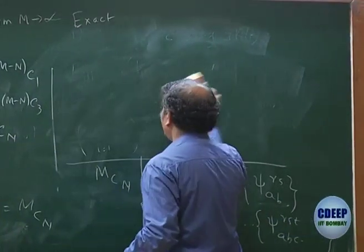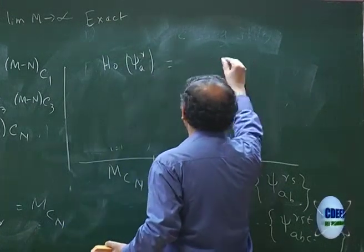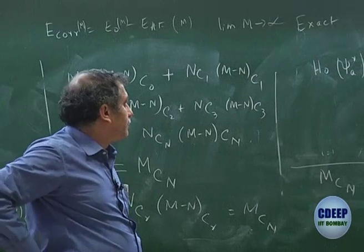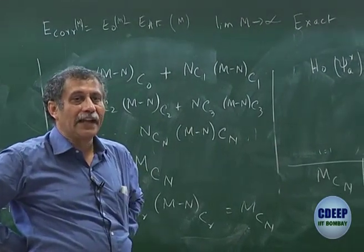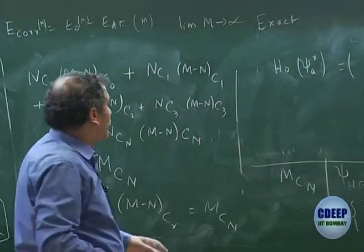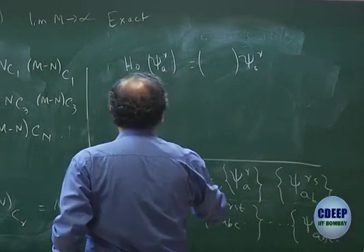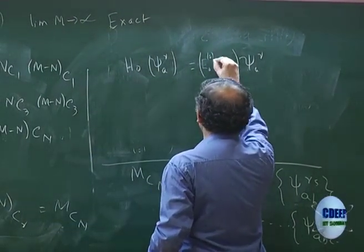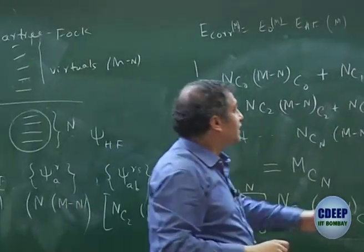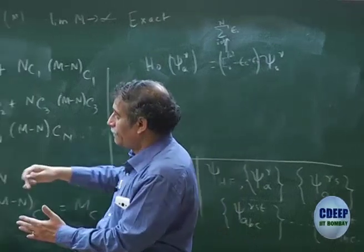Let me now write down what the eigenvalue is. Take one function: H₀ψ_AR = eigenvalue × ψ_AR. The eigenvalue is the sum of orbital energies — starting from E₀⁰ which is the sum of all occupied orbital energies, minus εA (the occupied orbital that was removed) plus εR (the virtual orbital that was added). I remind you the notation: A, B, C for occupied orbitals and R, S, T for virtual orbitals.